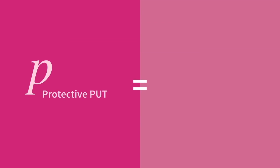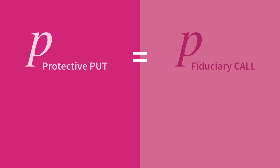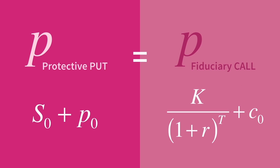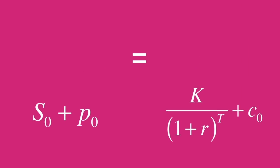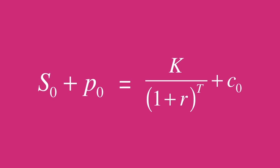If the payoff structure of a protective put is equal to that of a fiduciary call, then we should be able to equate their costs. A protective put is long asset plus long put option, so the cost is the initial asset price plus the put option premium. A fiduciary call is a long zero coupon bond plus a long call option, so the cost will be the present value of the bond's face value plus the option premium. This relationship equating all of these components is called put-call parity.